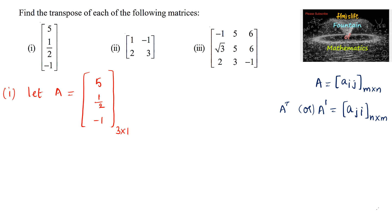So here we can write A transpose is equal to, the first row will become first column and the second row will become second column, third row will become third column. So the matrix will be of order 1 by 3. So this is transpose of the given matrix.